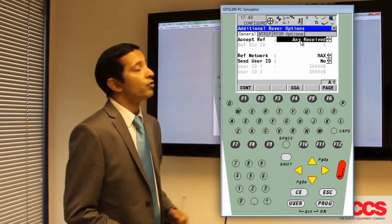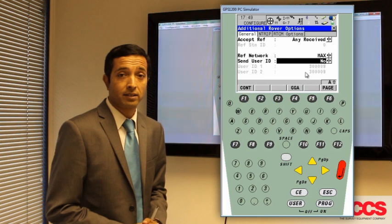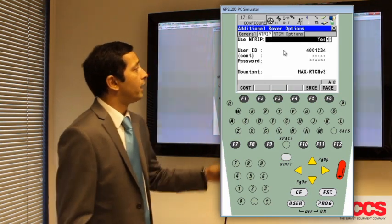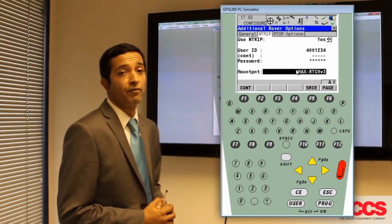Accept reference should be set to any received and your reference network ideally should be set to max. If this is the case, tab across to the NTRIP page and ensure that your mount point is set to max-RTCM version 3.